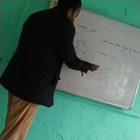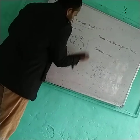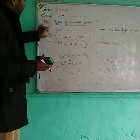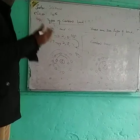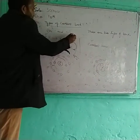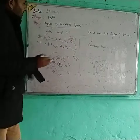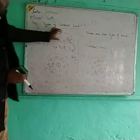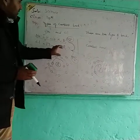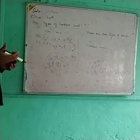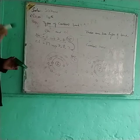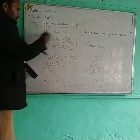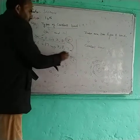Chlorine gains the electron from sodium and becomes negatively charged — Cl⁻. This means there is a complete transfer of electrons in an electrovalent or ionic bond. The atom that loses an electron develops a positive charge, and the atom that gains an electron develops a negative charge.